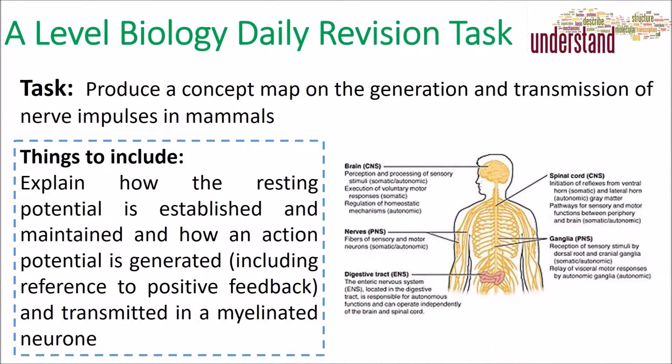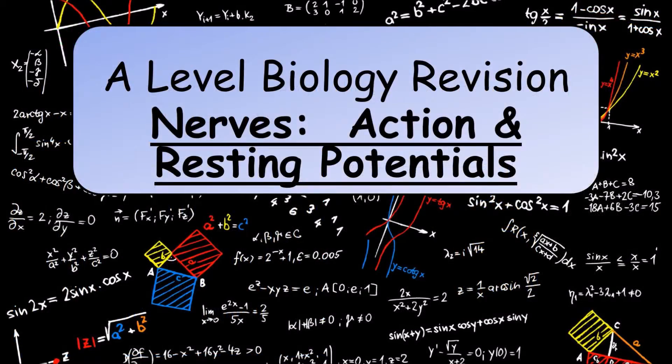Hello biologists and welcome to today's A-Level Biology daily revision task. In today's task you are asked to produce a concept map of the generation and transmission of nerve impulses in mammals. The following short video will outline many of the things that you may wish to include. Welcome to this A-Level Biology revision video on how action and resting potentials are maintained and generated in nerve cells.